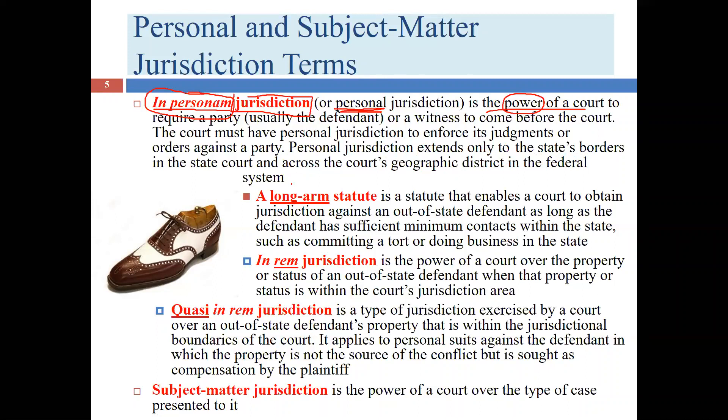For example, suppose Bob is suing Larry in Texas state court. Bob lives in Texas, but the car accident happened in Oklahoma and Larry is a lifelong Oklahoman who has never been to Texas. Bob doesn't want to sue Larry in Oklahoma — it's inconvenient — so he sues in Texas. Larry will likely object, saying the Texas state court doesn't have jurisdiction over him because he's never come to Texas, the accident didn't happen there, and he doesn't own anything in Texas.